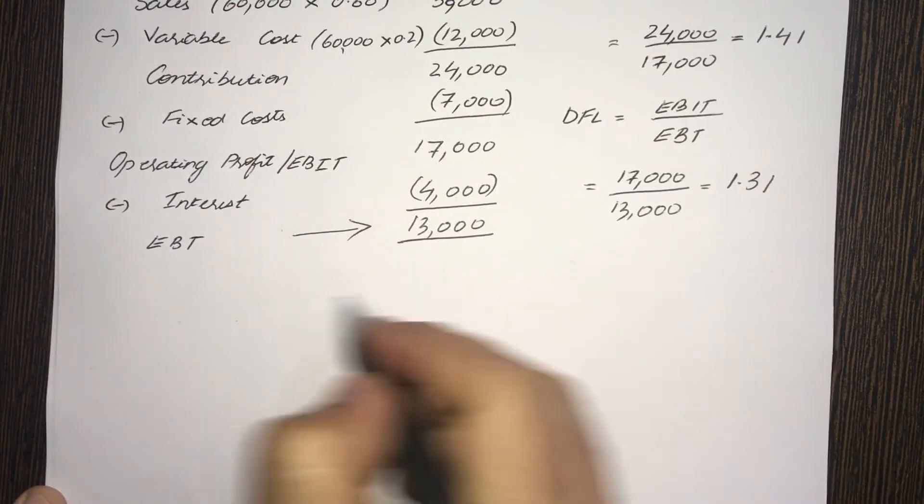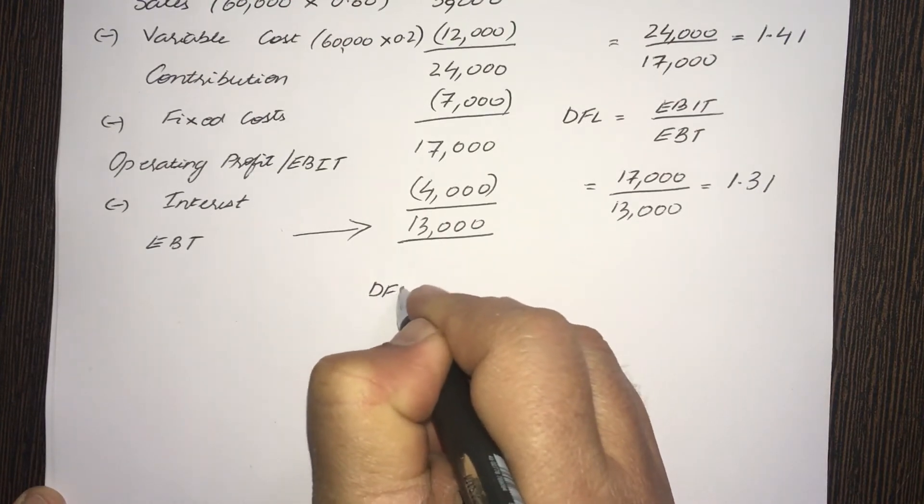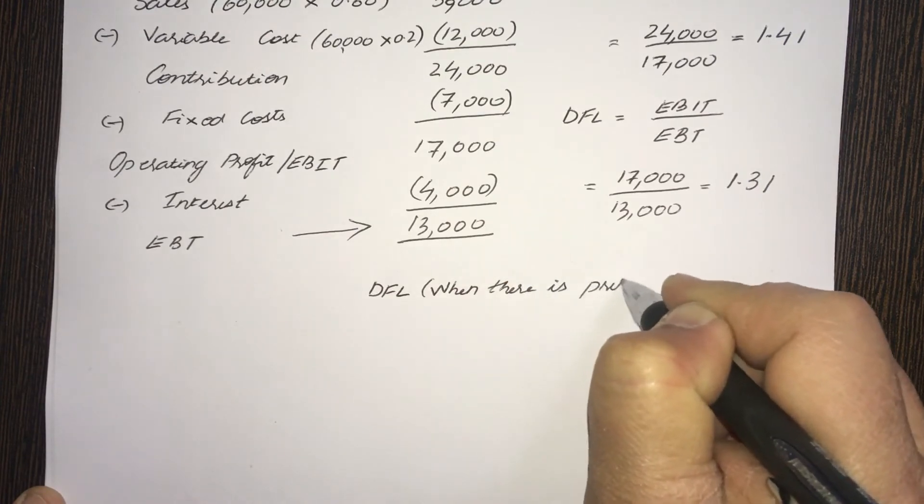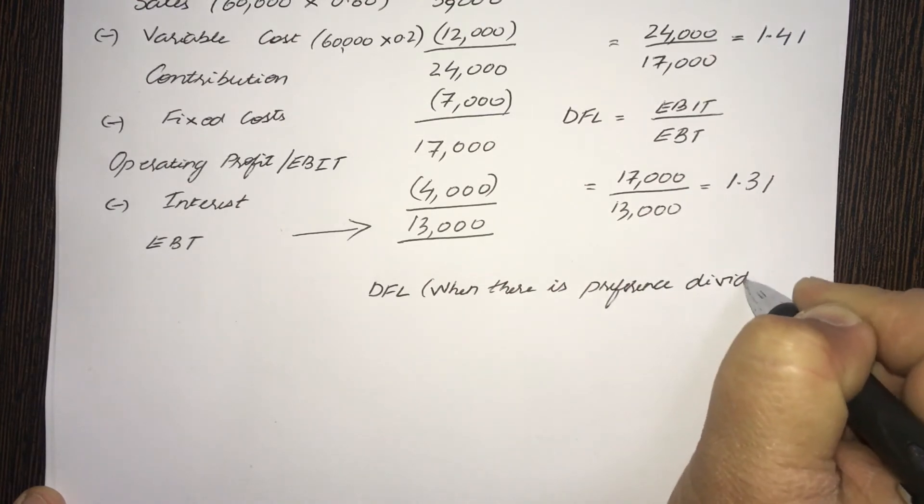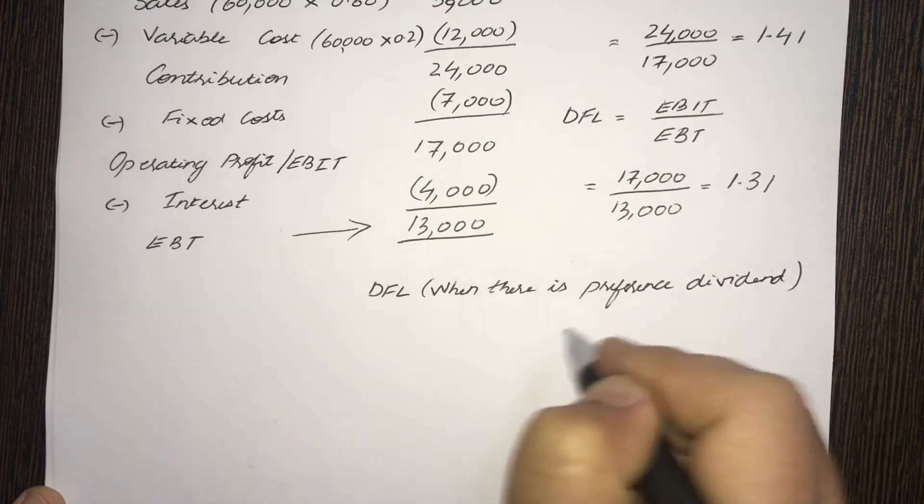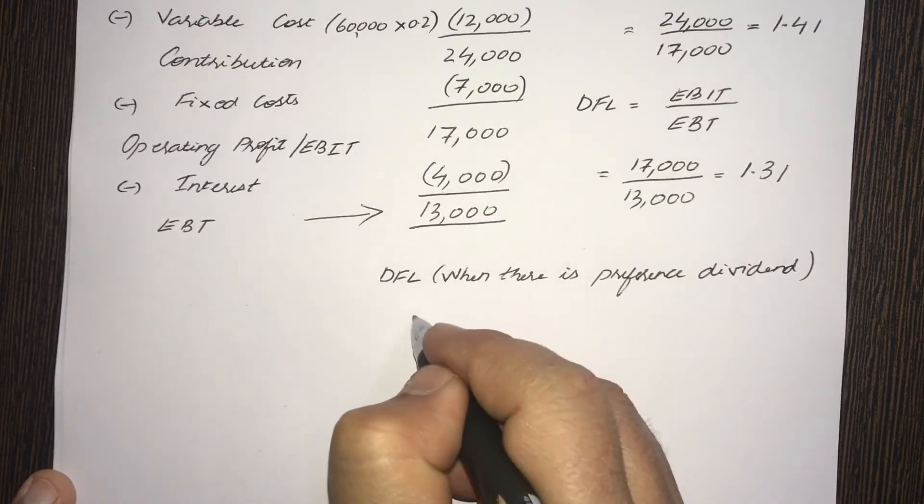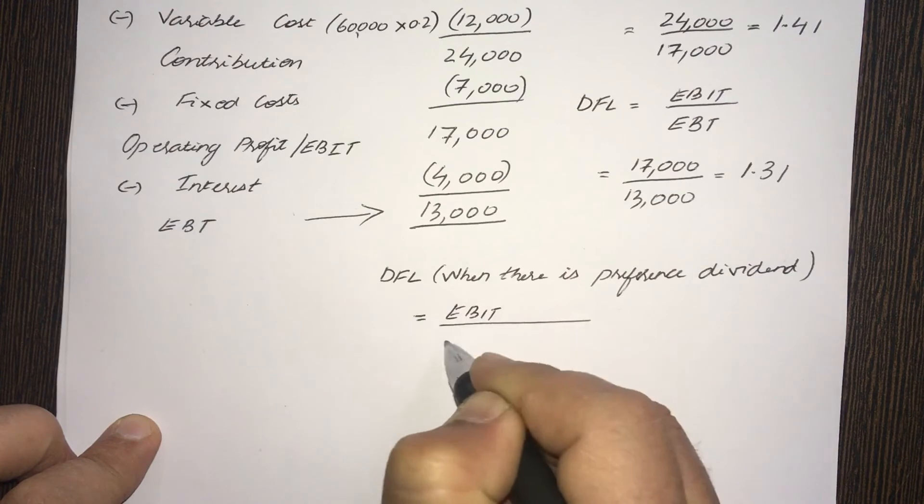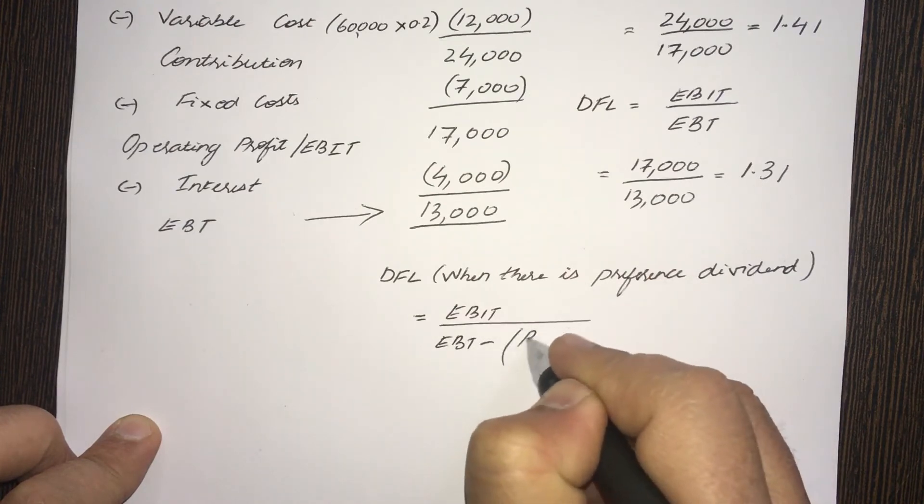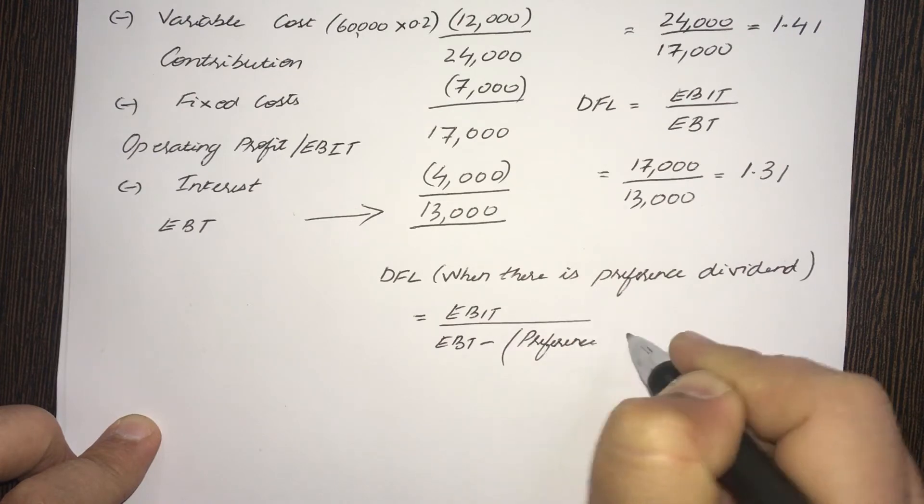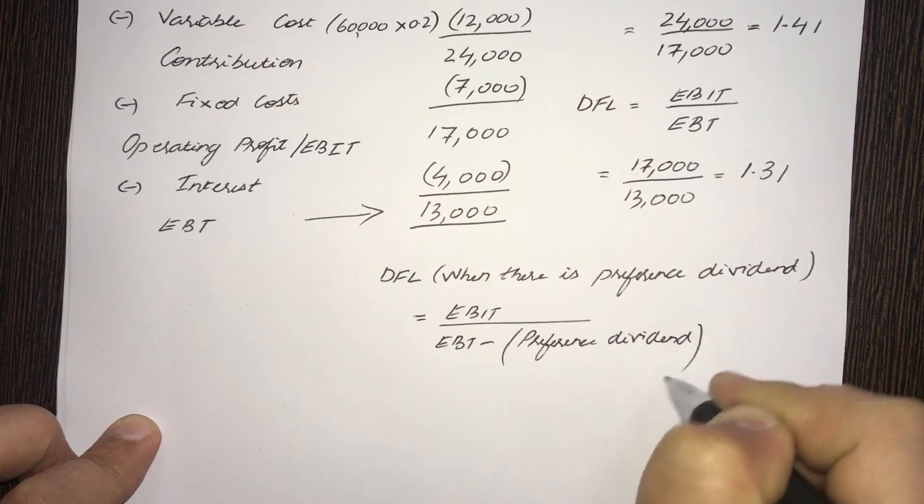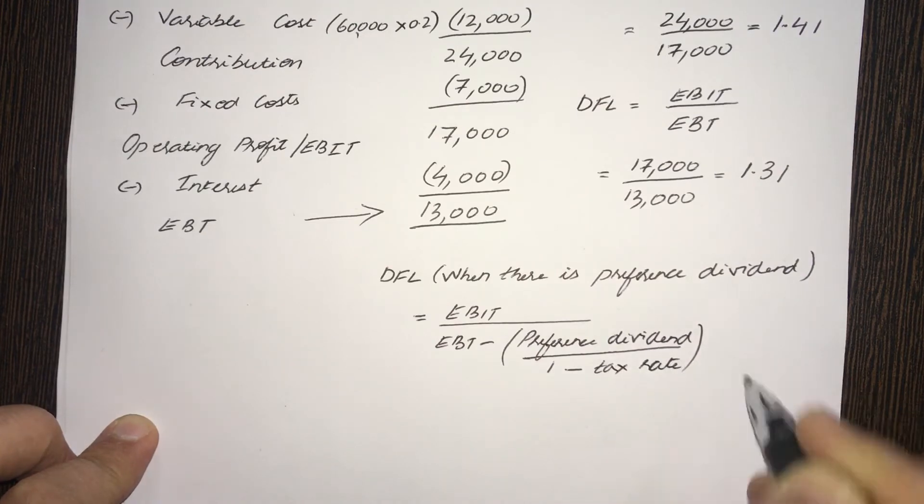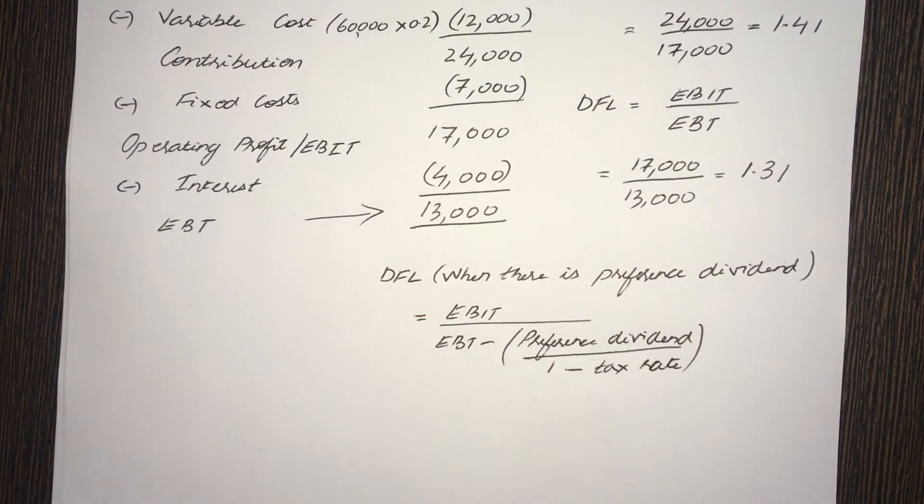Now, the formula for Degree of Financial Leverage when there is preference dividend. In this case, in this problem, there is no preference dividend. So, we ignore this, but I'm just giving you the formula. DFL when there is preference dividend is EBIT divided by EBT minus preference dividend, the whole thing by 1 minus tax rate. This is the formula when there is preference dividend.